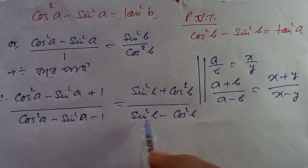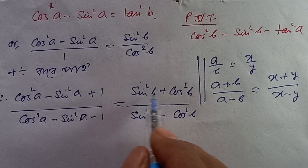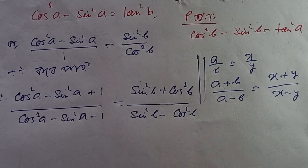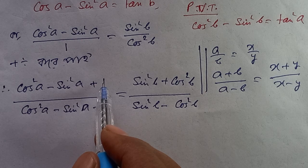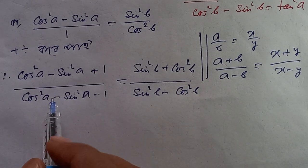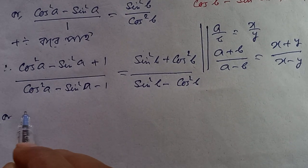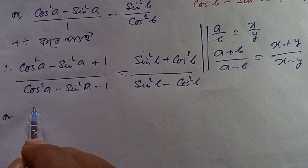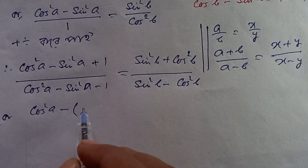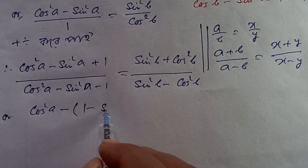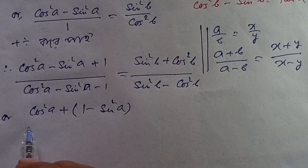We apply the identity sin²θ plus cos²θ equals 1. So we substitute: cos²a minus 1 is equal to 1 minus sin²b, using the Pythagorean identity.